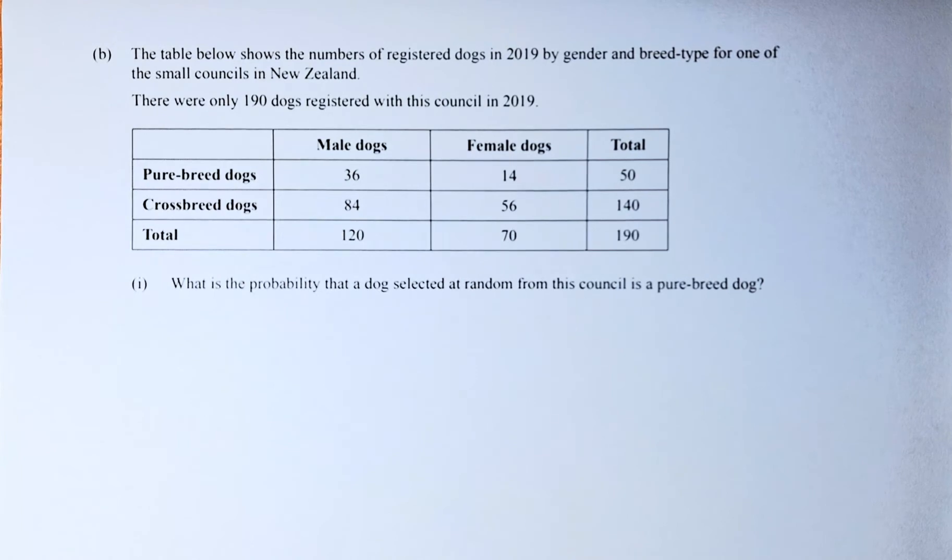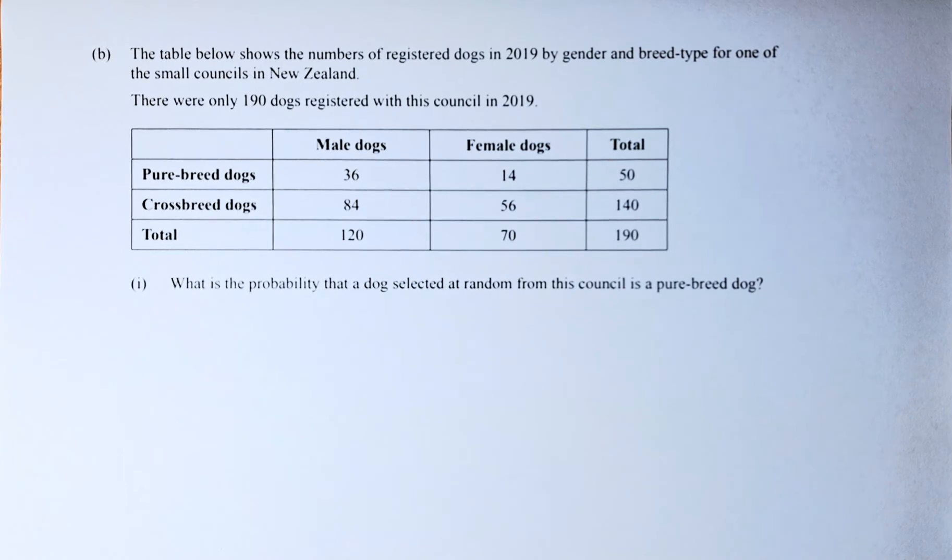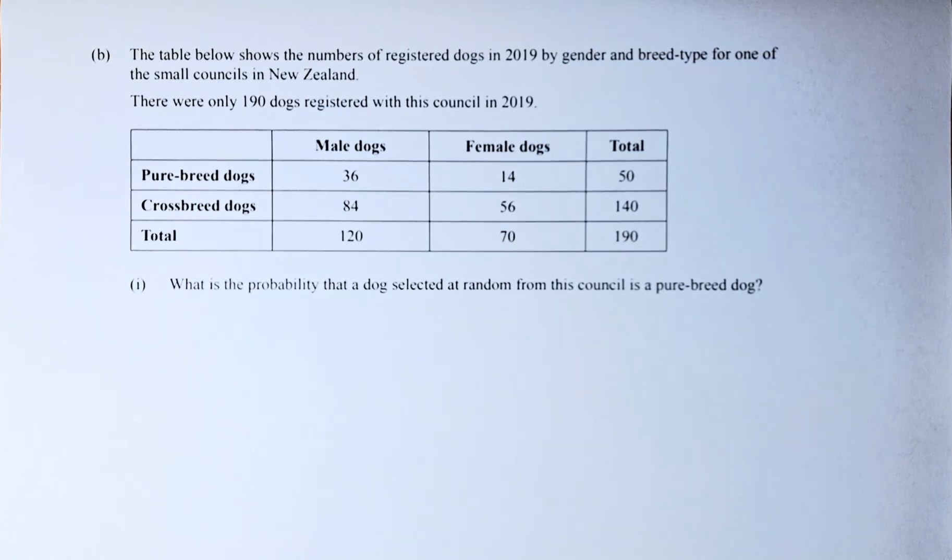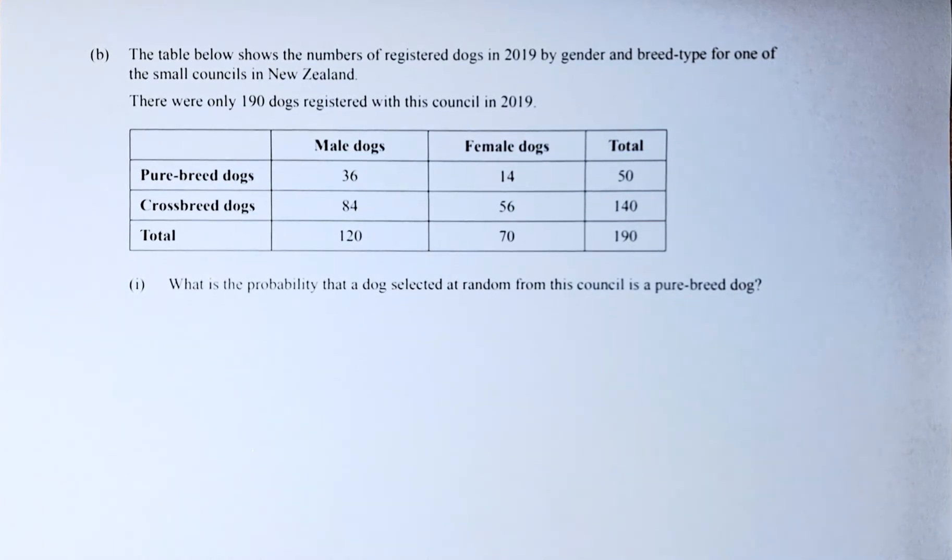The table below shows the number of registered dogs in 2019 by gender and breed type for one of the small councils in New Zealand. There are only 190 dogs registered with the council in 2019. So we have a table there, male dogs, female dogs, and on the row we have pure breed and crossbreed. So the question is, what is the probability that a dog selected at random is a pure breed?